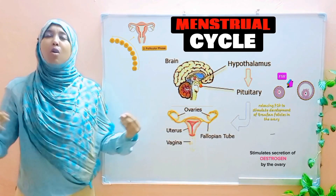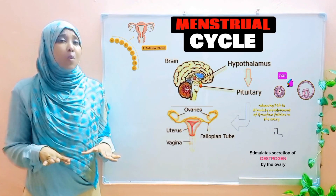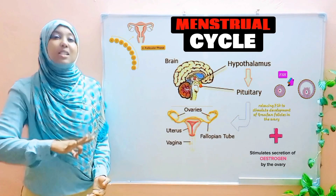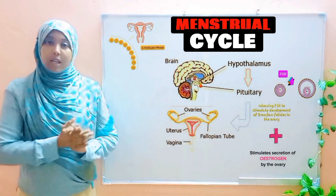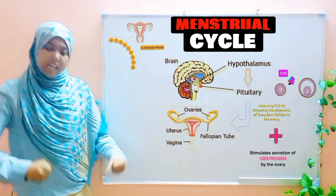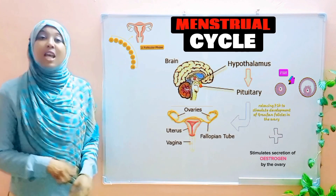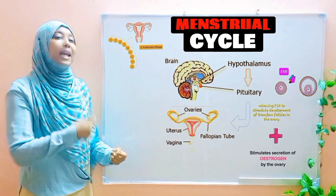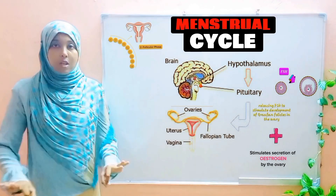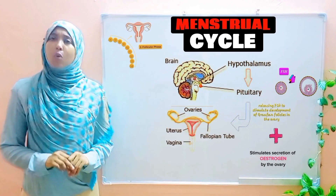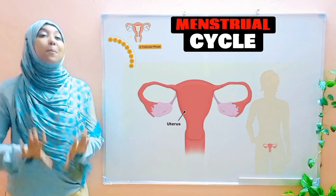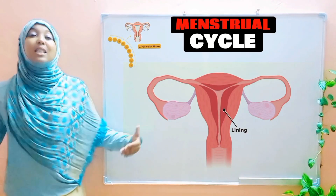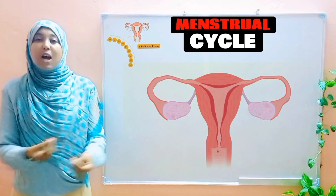Estrogen is probably the most well-known hormone when it comes to humans. It is produced by the ovary under the stimulation of FSH. Estrogen itself has two functions. Function number one is that it stimulates the repair and healing of the endometrium — the inner lining of the uterus — which was broken down and discharged during menstruation.